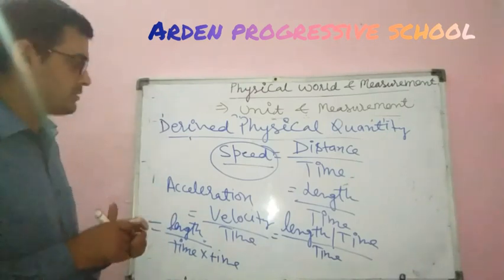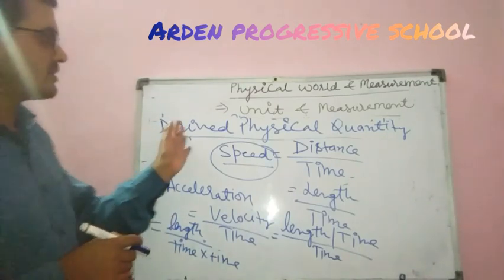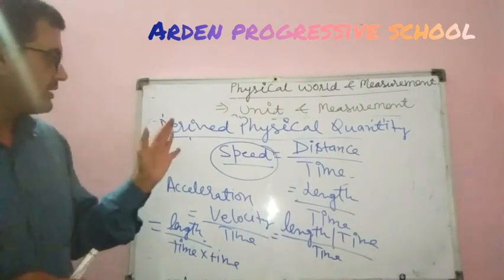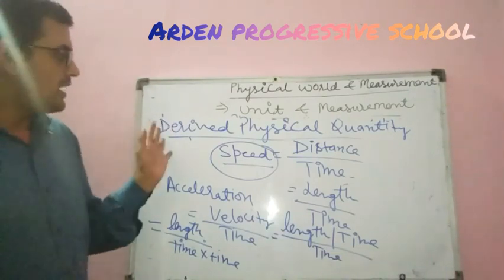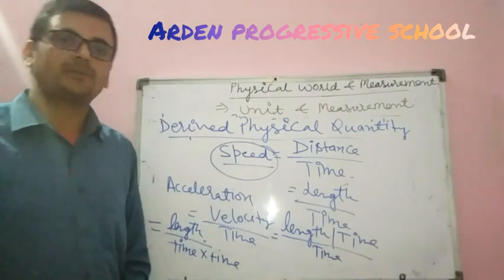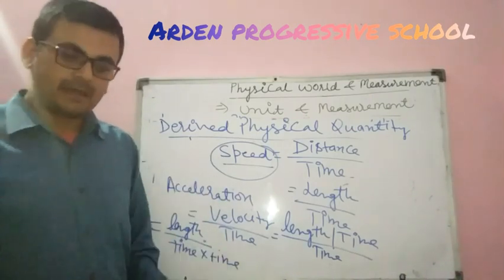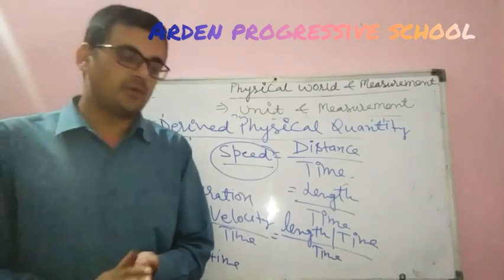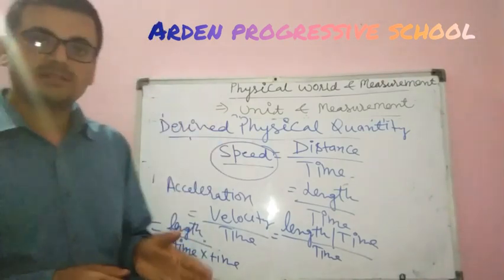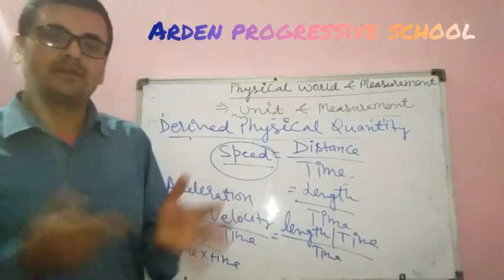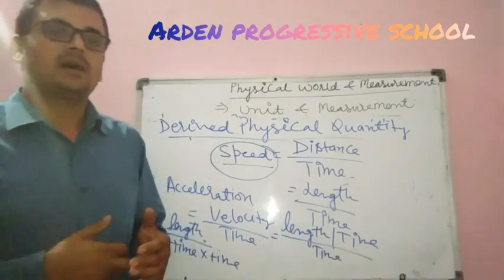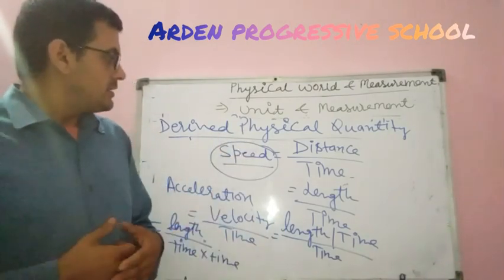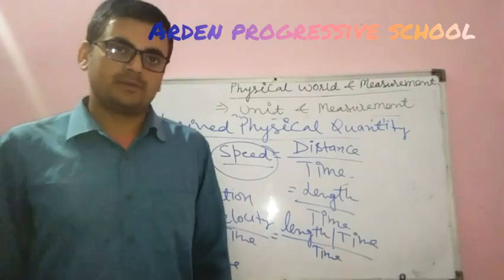So derived physical quantities are those quantities which are formed due to the combination of two or more fundamental physical quantities. I hope you have understood all these points: physical quantity, measurement of physical quantity, unit, fundamental unit, and derived unit. Thank you very much.